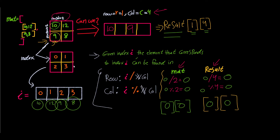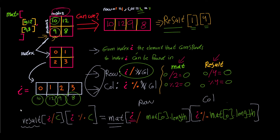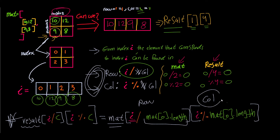To summarize the formula: result is the new reshaped matrix, mat is the original. For flat index i, the element's position in the original matrix is row = i / mat[0].length and column = i % mat[0].length. Its position in the new reshaped matrix is row = i / c and column = i % c, where c is the number of columns in the new matrix.